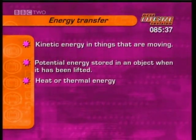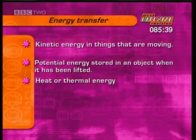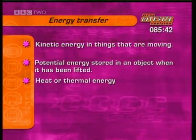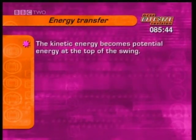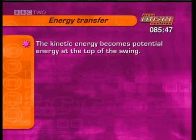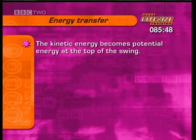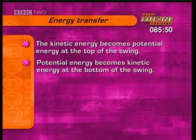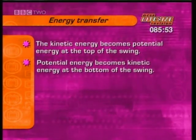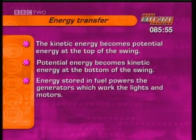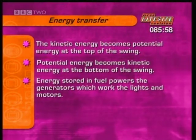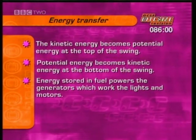The clip also showed how energy could change from one form to another. The kinetic energy of the giant swing becomes extra potential energy at the top of its swing, and the potential energy becomes kinetic energy again at the bottom. The energy stored in the fuel powers the generators, which work the lights and motors.